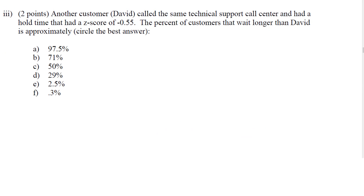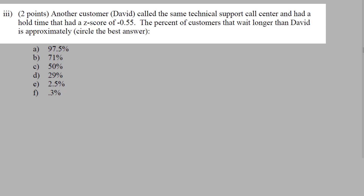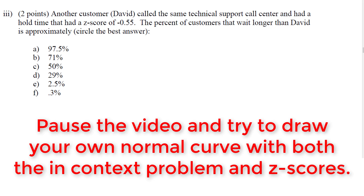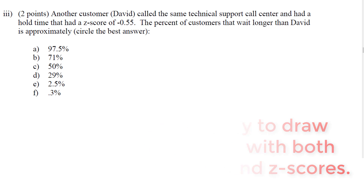A lot of people wonder how on the test you might get asked these questions without using the David M. Lane applet or having a z-table. We have another caller here, David, and David had a z-score of negative 0.55. This is where drawing it out comes in very handy. Go ahead and draw a normal curve for yourself right here — you can pause the video — then mark where David would be at negative 0.55.